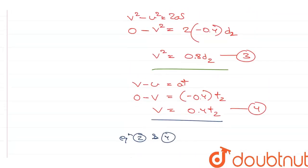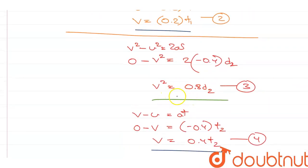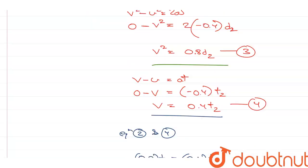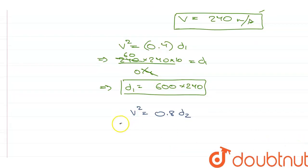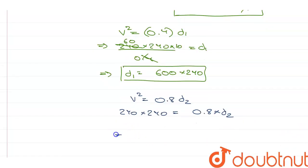Similarly, if I use the value of V in equation number 3, I get V square is equal to 0.8 D2. So, 240 into 240 is equal to 0.8 into D2 which means D2 is equal to 300 into 240.